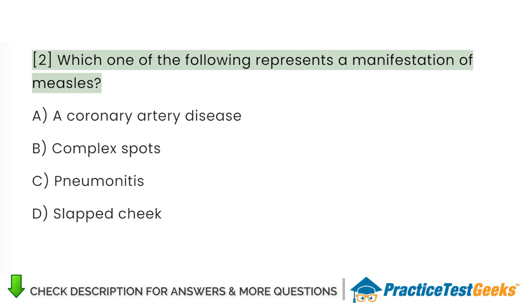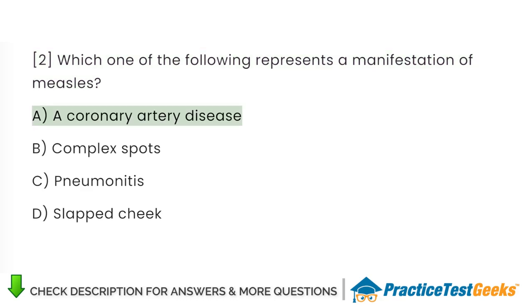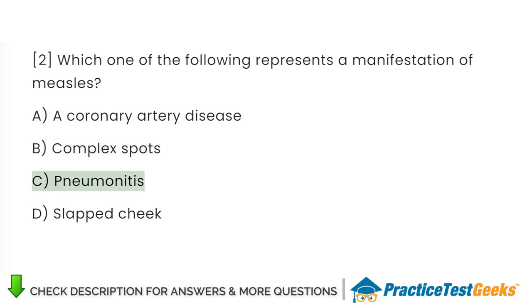Which one of the following represents a manifestation of measles? A. Coronary artery disease. B. Koplik spots. C. Pneumonitis. D. Slapped cheek.